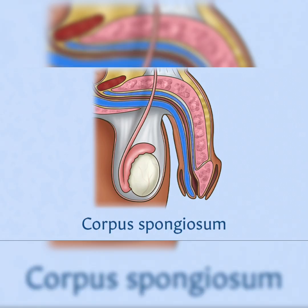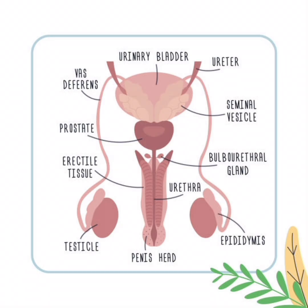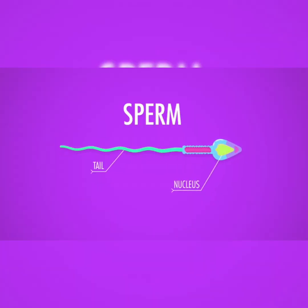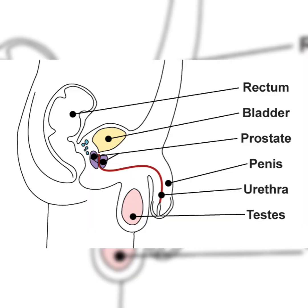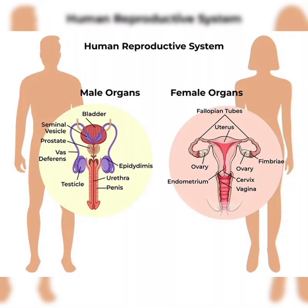This video includes the structure of the male and female reproductive system. The internal and external parts are described in brief and easy to understand. The male reproductive system consists of organs involved in reproduction and urination. Producing, maintaining, and transporting semen and sperm is the main function. Sperm are the male reproductive cells, while semen is a fluid that protects and carries them. It includes internal and external components.